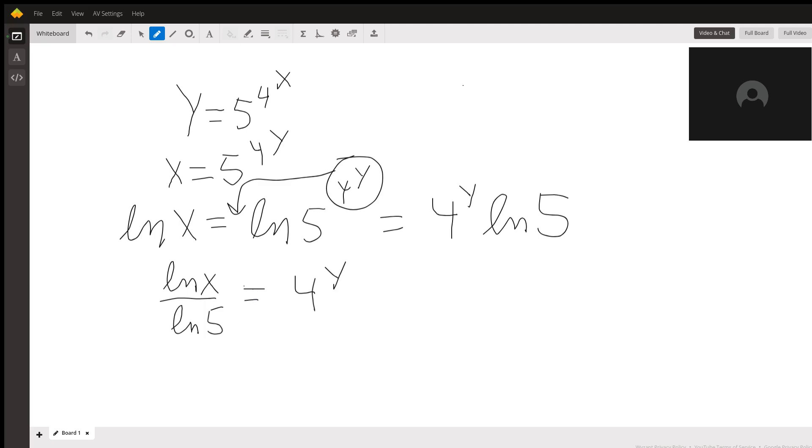Solving for y, I'll just take the natural log of both sides again. I'll do it over here. Natural log of log of x over log of 5 equals natural log of 4 to the y.